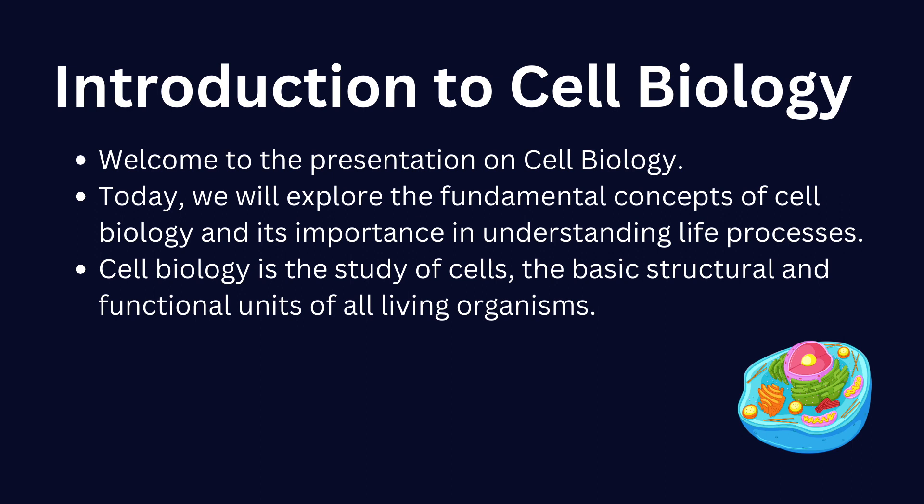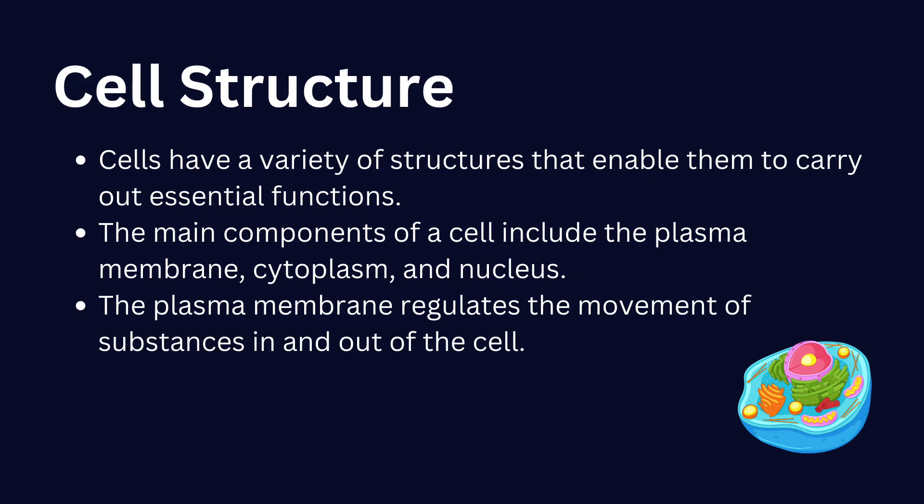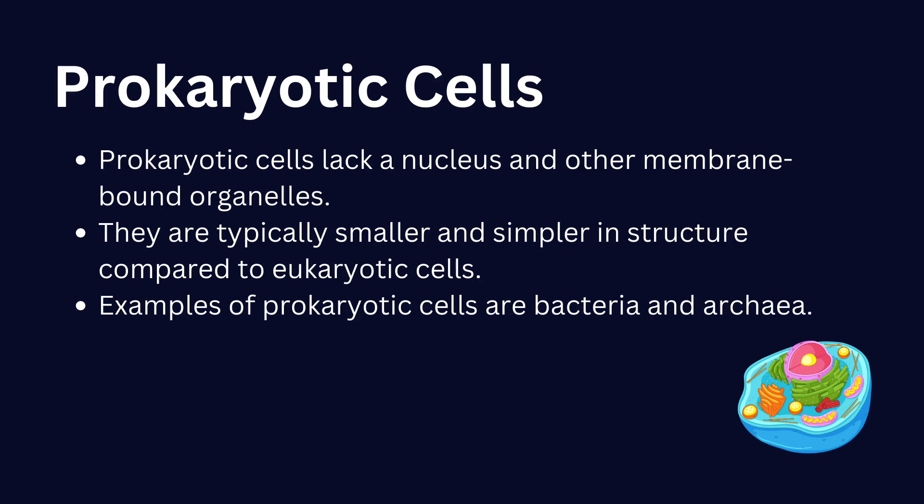Let's begin with cell structure. Cells have a variety of structures that enable them to carry out essential functions. The main components of a cell include the plasma membrane, cytoplasm, and nucleus. The plasma membrane regulates the movement of substances in and out of the cell.